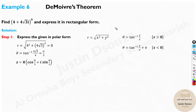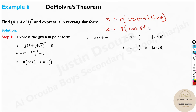First, write it in polar form. Z is equal to R times cos theta plus i sine theta. Z is 8 cos 60 degrees plus i sine 60 degrees. Please mention degrees over here. Next, you apply the formula. Z to the power N equals R to the power N, with N multiplied to theta.